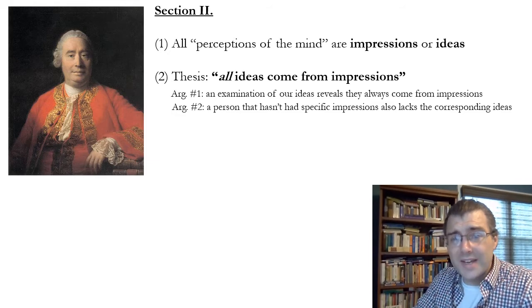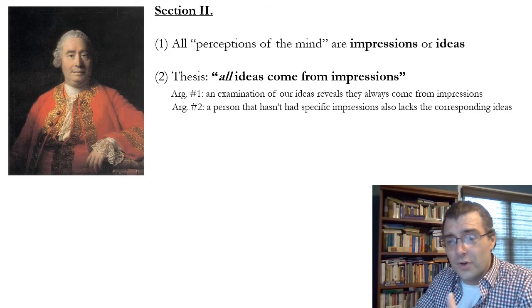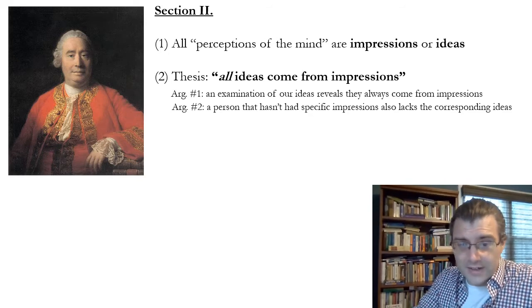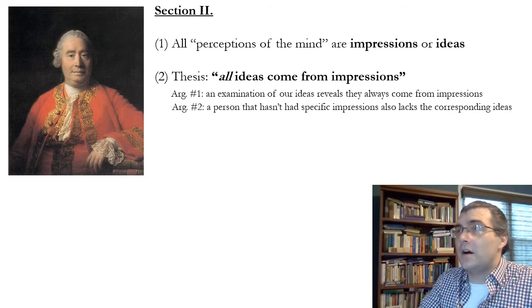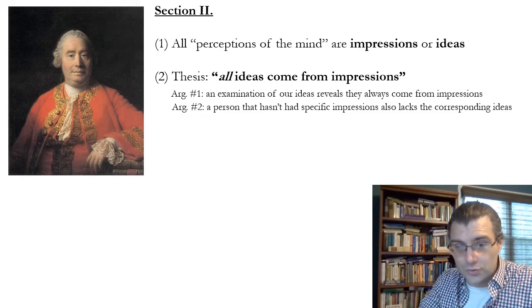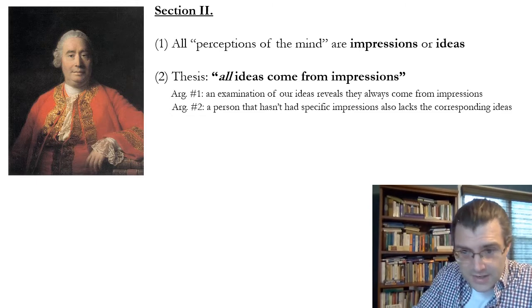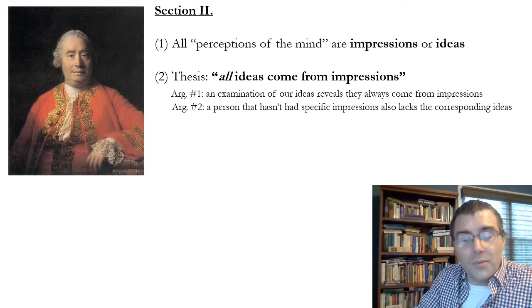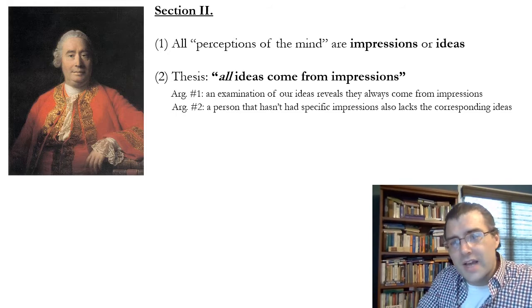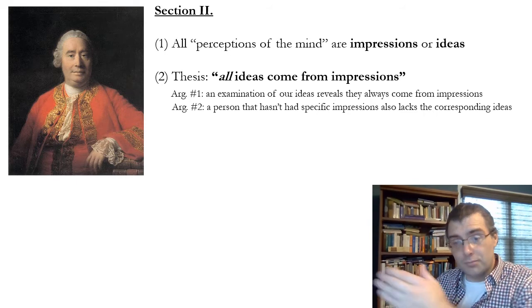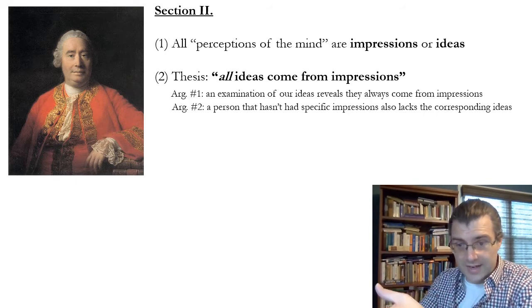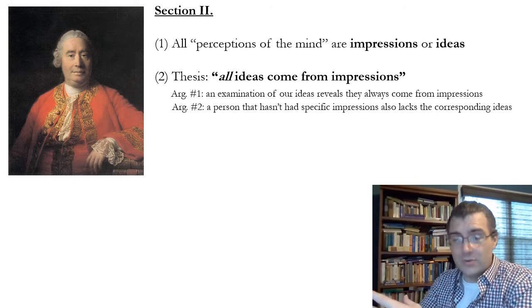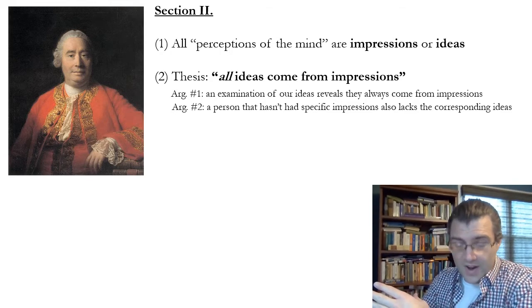It is true we can have ideas of all kinds of things, and Hume recognizes that. I mean, we can have the idea of a gold mountain, a mountain made entirely of gold, for instance, which probably doesn't exist anywhere. But we can have that idea. But where does the idea come from? It comes, Hume thinks, from our impressions of gold things and our impressions of mountains put together in some way, right?